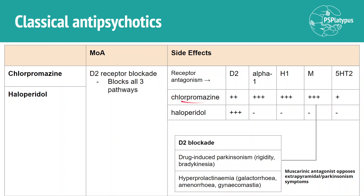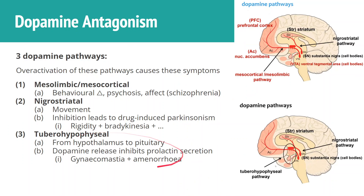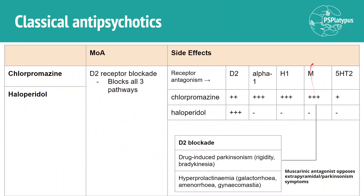Therefore, chlorpromazine is actually pretty good if someone goes on haloperidol but experiences a lot of extrapyramidal symptoms — it's worthwhile to consider switching to chlorpromazine. For D2 blockade, the side effect for chlorpromazine will be hyperprolactinemia. We treat the schizophrenia, cause and also partly fix Parkinsonism via muscarinic antagonism, and end up with hyperprolactinemia — manifesting as galactorrhea, amenorrhea, and gynecomastia.